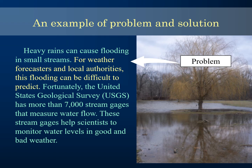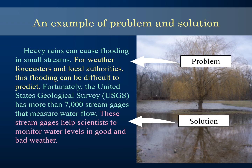The problem is that flooding can be difficult to predict — the word 'difficult' signals that something is wrong or troublesome. The solution is that they developed stream gauges that help monitor water levels in good and bad weather, which helps them predict flooding. That's a problem followed by a solution.